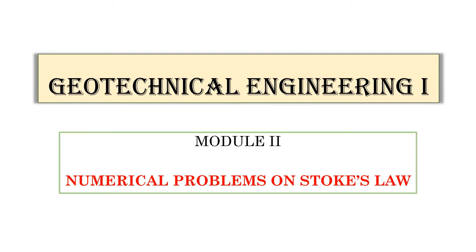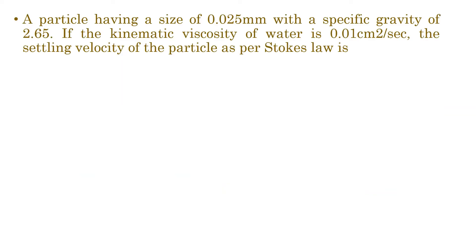Hi, hello, welcome back to geotechnical engineering class. First question: a particle having a size of 0.25 mm with a specific gravity of 2.65. If the kinematic viscosity of water is 0.01 centimeter square per second, find the settling velocity of the particle as per Stokes' law.